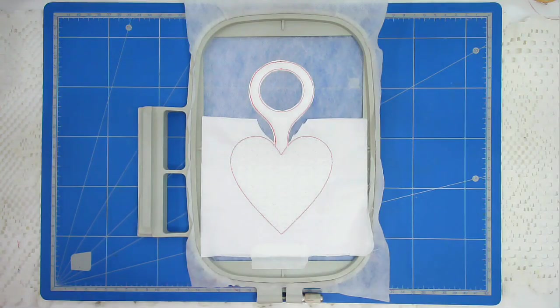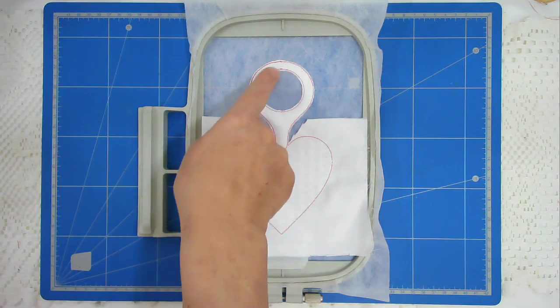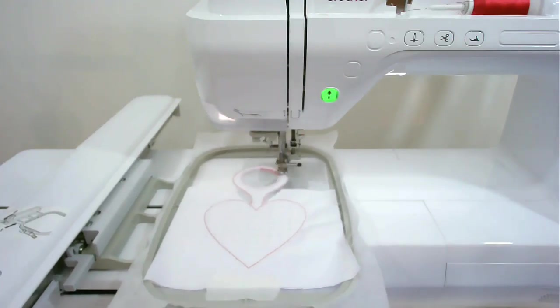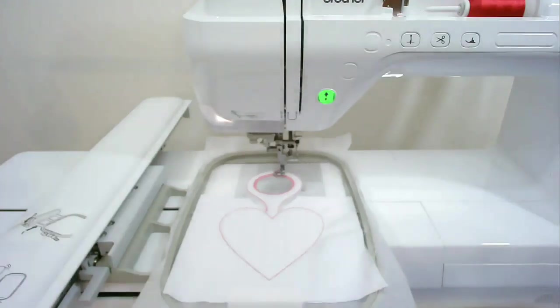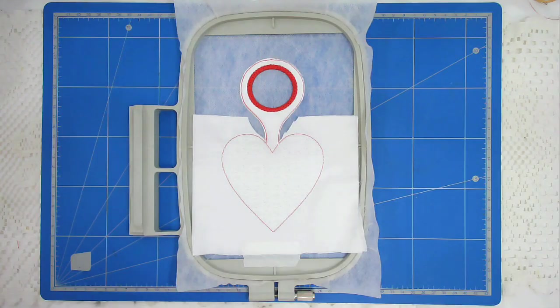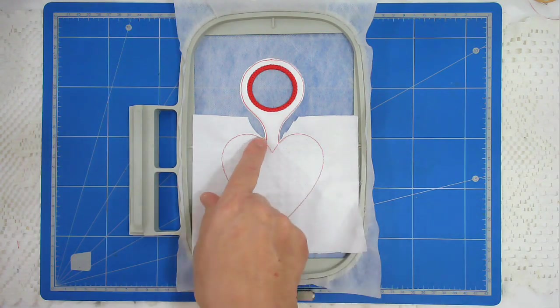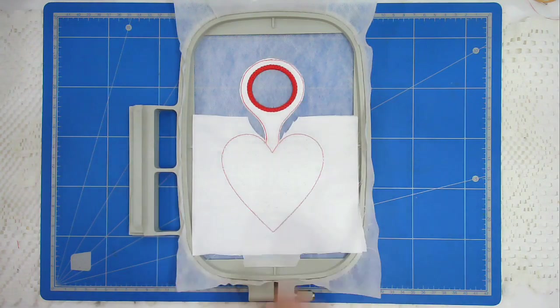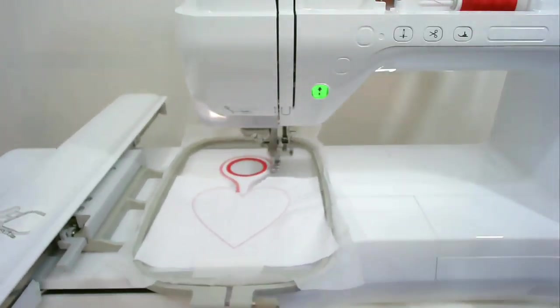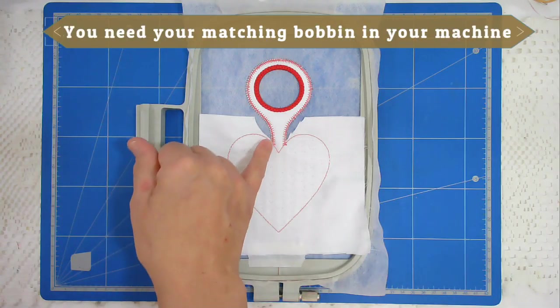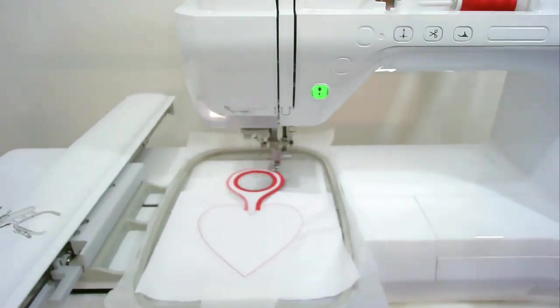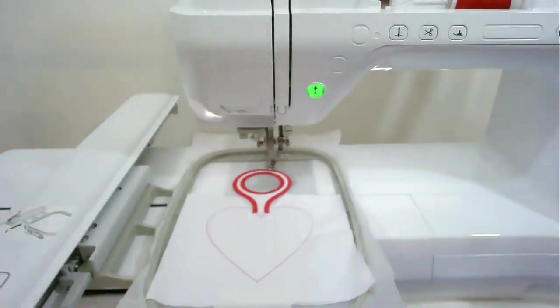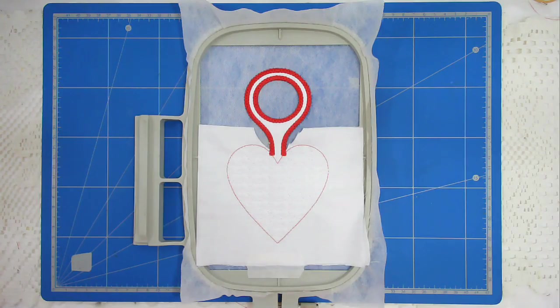Now I'm going to put that back in my machine and stitch round number 6, which is the zigzagging that goes around the inner circle there. Next is round number 7, and that's the decorative stitching around the inner part of the circle. Next is round number 8, and that's going to do this zigzagging all the way around the edge here. And round number 9 is going to do the decorative satin stitch around the edge on top of the zigzagging. Next, round number 10, and that's going to do the wording in the middle.